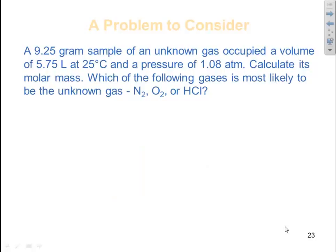Let's look at an example. I have a 9.25 gram sample of unknown gas occupying a volume of 5.75 liters at 25 degrees C and a pressure of 1.08 atmospheres. Calculate its molar mass. We're talking about a gas, we're going to use the ideal gas law with our little substitution of n equals mass over molar mass. So after we calculate the molar mass they want us to guess which one of these gases we expect it to be closest to. Well in this case we're just looking at the molar mass of these three species and seeing which number it's closest to.